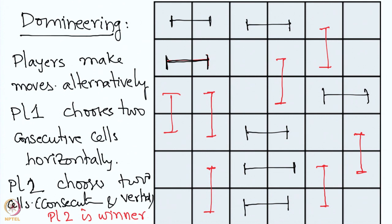Typically in combinatorial games, the last person to make a move is the winner. There is another version where the last person to make a move is the loser, which are known as misère games. But the common version is normal play, where the last person to make the move is the winner. We will now look at another game known as chomp.